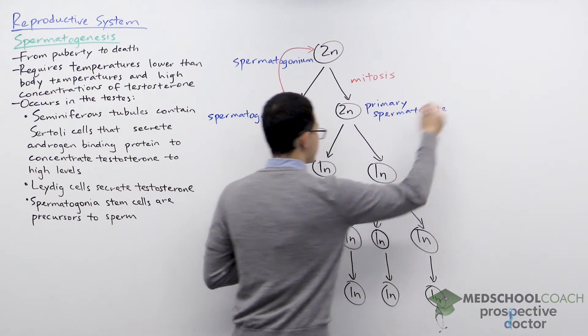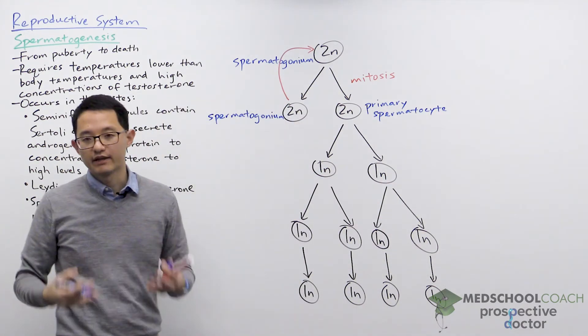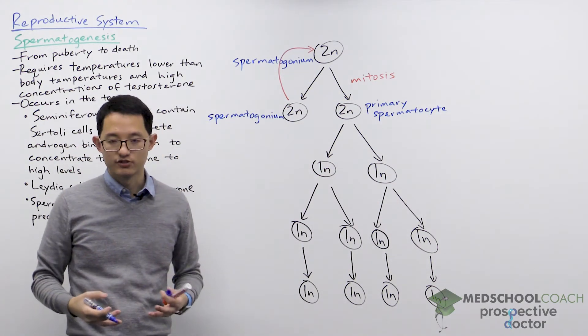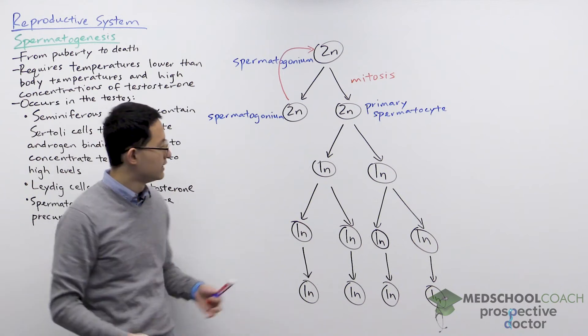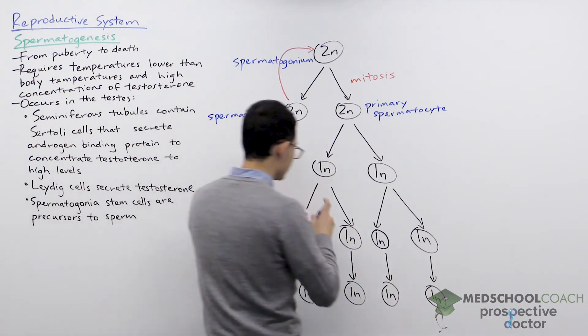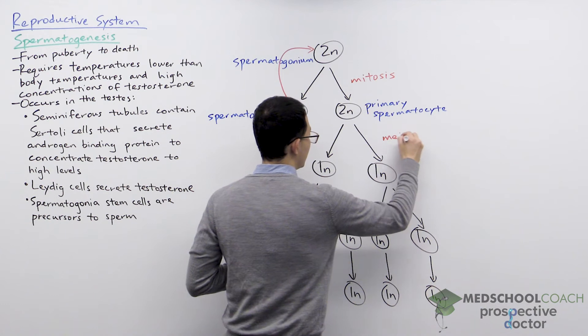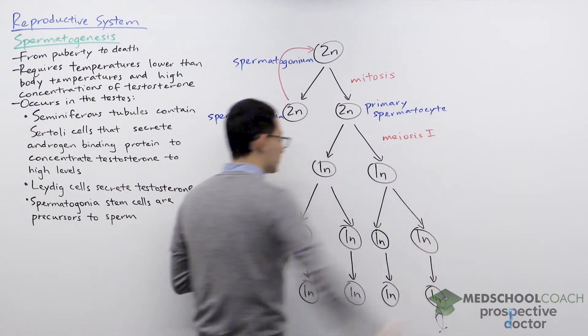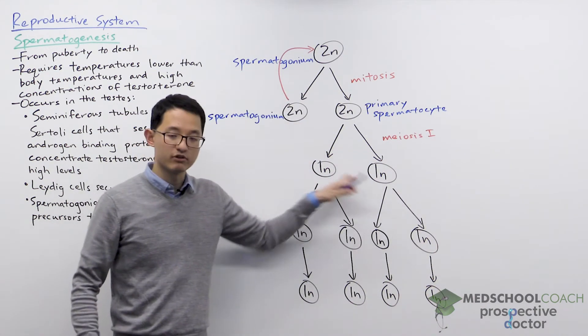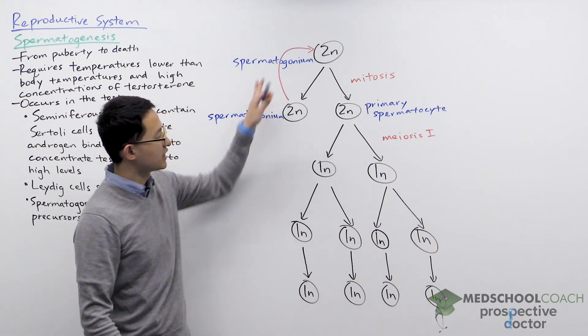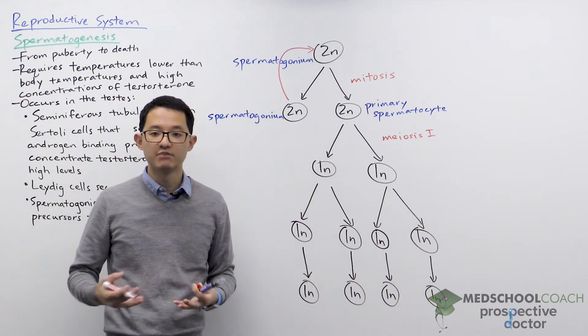The primary spermatocyte is going to go through molecular processes that commit it to go through meiosis. So when it completes meiosis I, we're going to form two haploid cells. Notice that mitosis forms identical diploid cells.